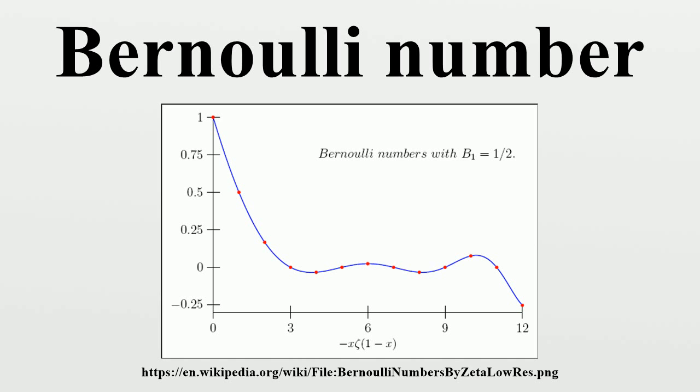The Bernoulli numbers were discovered around the same time by Swiss mathematician Jacob Bernoulli, after whom they are named, and independently by Japanese mathematician Seki Kowa. Seki's discovery was posthumously published in 1712 in his work Katsuyo Sampo. Bernoulli's was also posthumously published in his Ars Conjectandi of 1713. Ada Lovelace's notes on the Analytical Engine from 1842 describes an algorithm for generating Bernoulli numbers with Babbage's machine. As a result, the Bernoulli numbers have the distinction of being the subject of the first published complex computer program.